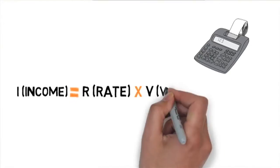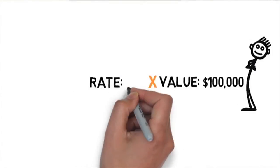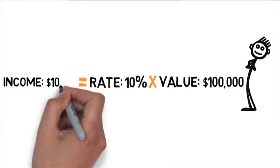If you want to calculate for income, that's right, take the value and multiply by the rate. For example, if the value of the property is $100,000 and the rate is 10%, then the income is $10,000.